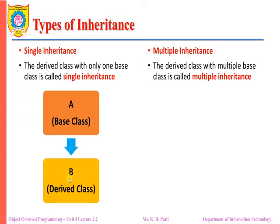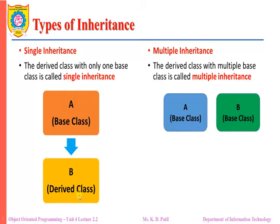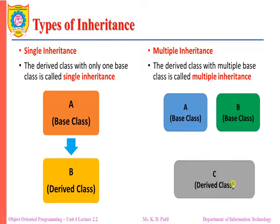Single inheritance: when a derived class has only one base class, it is referred to as single inheritance. For example, class A is the base class and class B is the derived class inheriting properties from class A. Since the derived class has only one base class, it is a single inheritance — a one-to-one relationship.